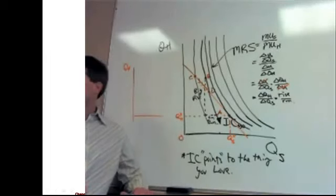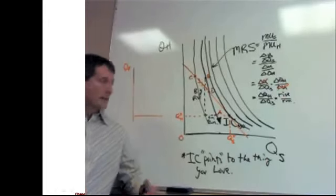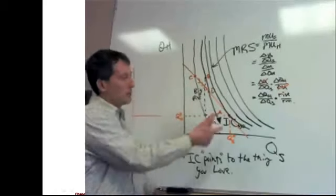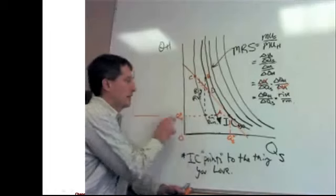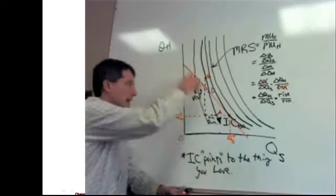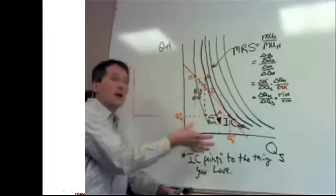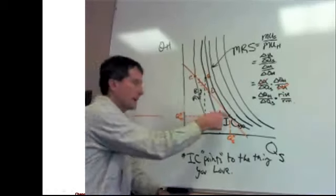So, will we have to answer something like that on the test with the Q-S-star and Q-H? Possibly. So, that just means it's the optimal... Yeah. So, on this question, I could say, is there any other combination of shoes and hats that could make this person happier given their current income and prices? Answer, no. They've done it. That maximizes utility.